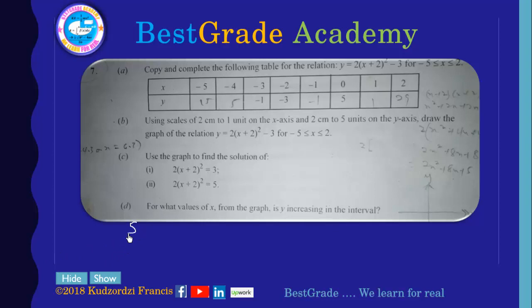So let's look at how we do this. So this is the first blank space, that is where x equals negative 5. So x equals negative 5, y will be equal to 2 into bracket negative 5 plus 2 all squared minus 3.